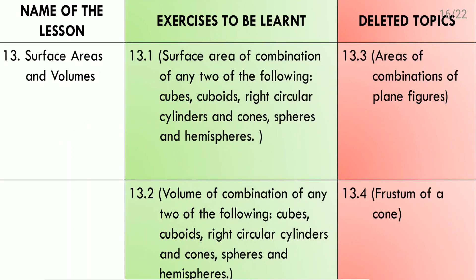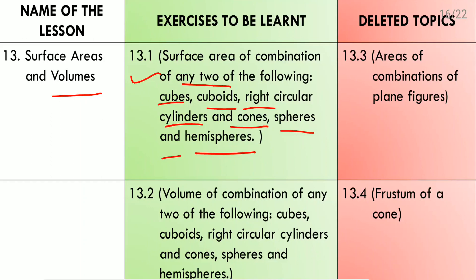Lesson 13: Surface Areas and Volumes. Exercise 13.1 covers surface areas of combinations of any two of the following: cubes, cuboids, right circular cylinders, cones, spheres, and hemispheres. Exercise 13.2 is about volumes of combinations of two solids from the same set. Exercise 13.3, about areas of combinations of plane figures, is deleted. Exercise 13.4, about the frustum of a cone, is also deleted.